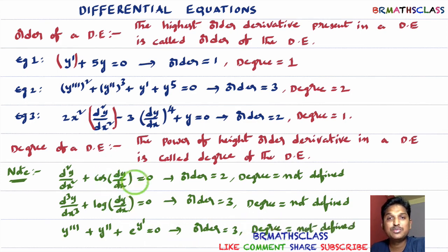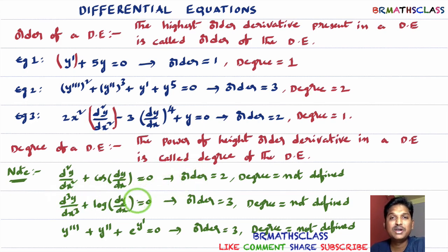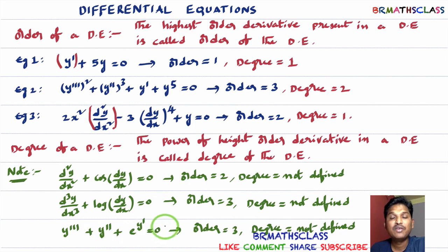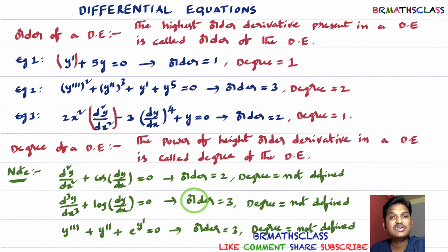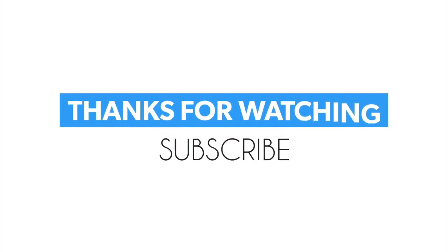To summarize: whenever you see sine, cosine, or tangent of dy by dx in a differential equation, its degree is not defined. Similarly, when you observe log of dy by dx or e power dy by dx — in all such cases we cannot express it as a polynomial in derivatives, so the degree is not defined. I hope you understand this class.